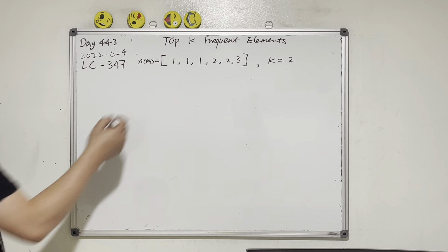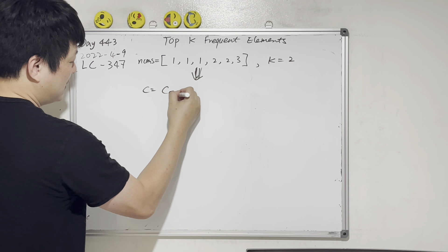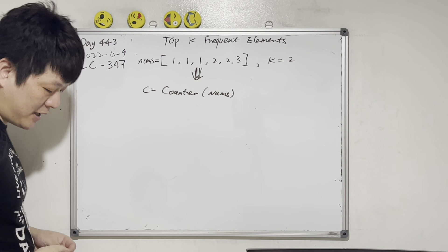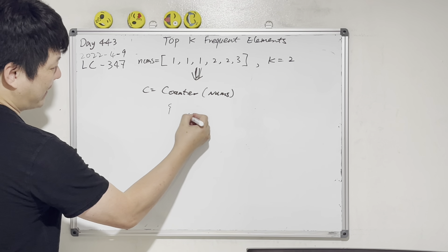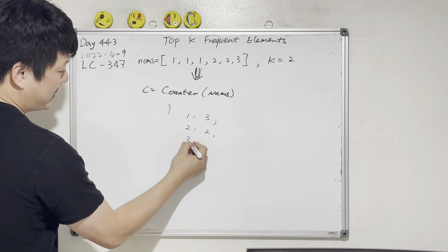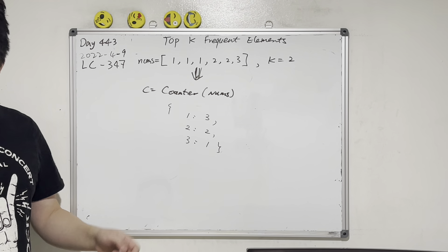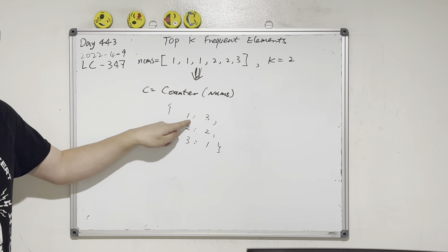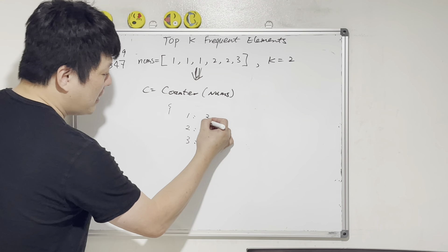Exactly. So let's do this — Counter c equals Counter(numbers). What does it give us? C is a dictionary where key 1 appears three times, key 2 appears two times, key 3 appears one time. The keys are the elements, the values are the frequency.